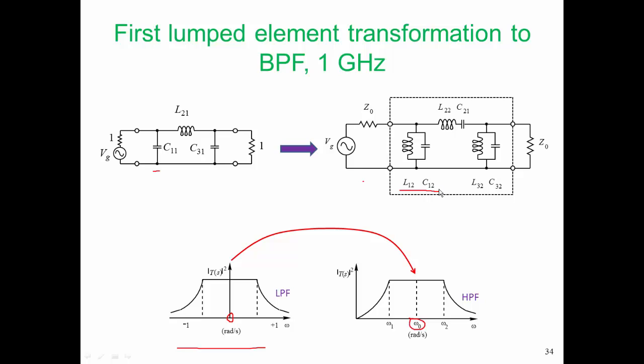Now, that transformation doesn't give us enough information to say what the actual value of L12 and C12 are. It's just telling us they resonate at omega zero. Similarly, L21 will be a short circuit at DC. Therefore, we want the transformed elements representing L21, L22 and C21, to look like a short circuit at the bandpass center frequency. Therefore, L and C must form a series resonant circuit.